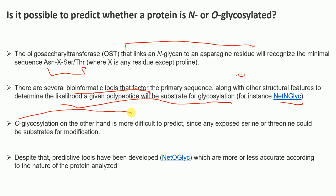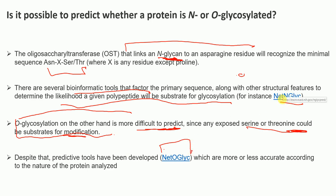Predicting O-glycosylation is more difficult because any exposed serine or threonine could be a substrate for modification. Despite this, prediction tools like NetOGlyc are available, which are more or less accurate depending on the nature of the protein analyzed.